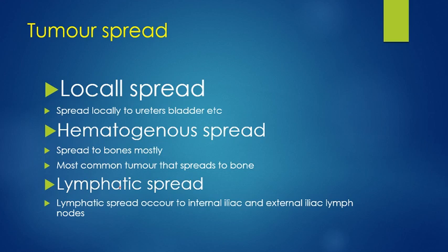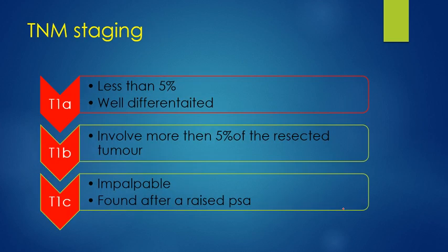Local spread of the tumor can occur to the ureters, bladder, and nearby organs. Hematogenous spread occurs mostly to bones, so lower back pain is a common clinical symptom in prostate CA. Lymphatic spread occurs to the internal and external iliac lymph nodes and then to various organs.